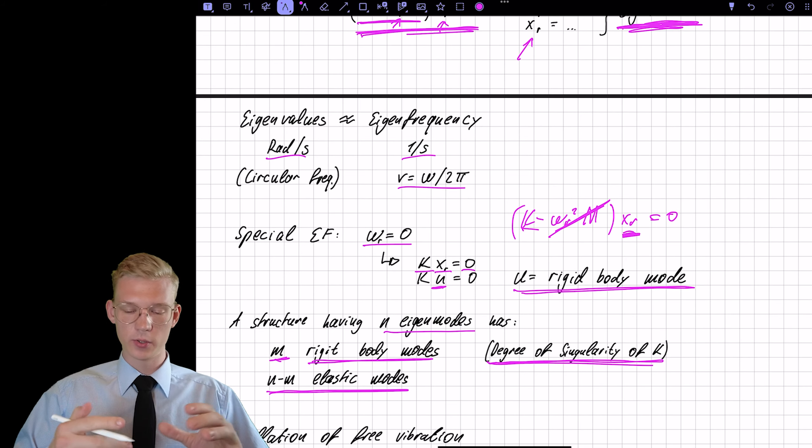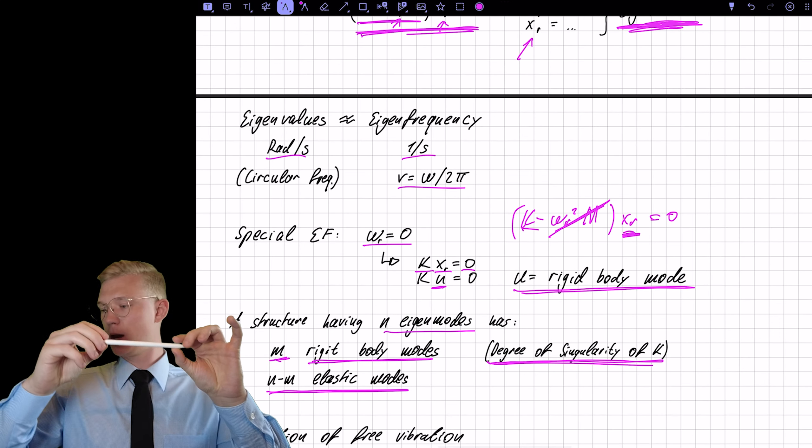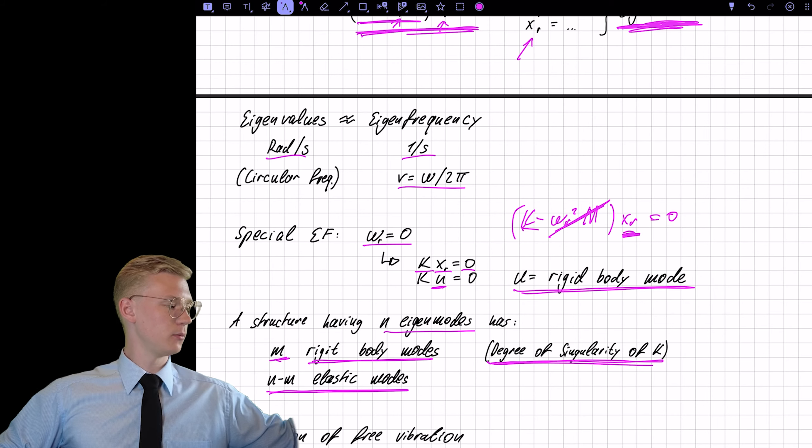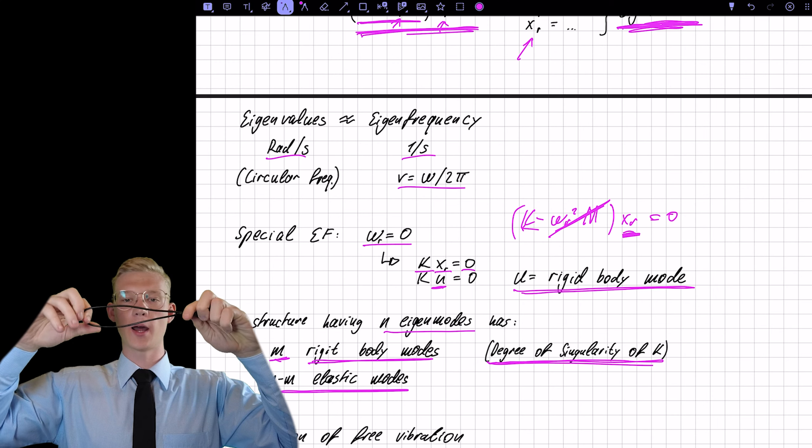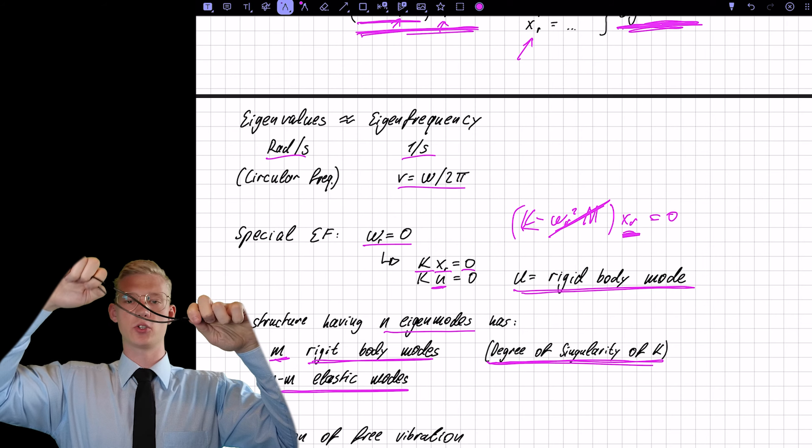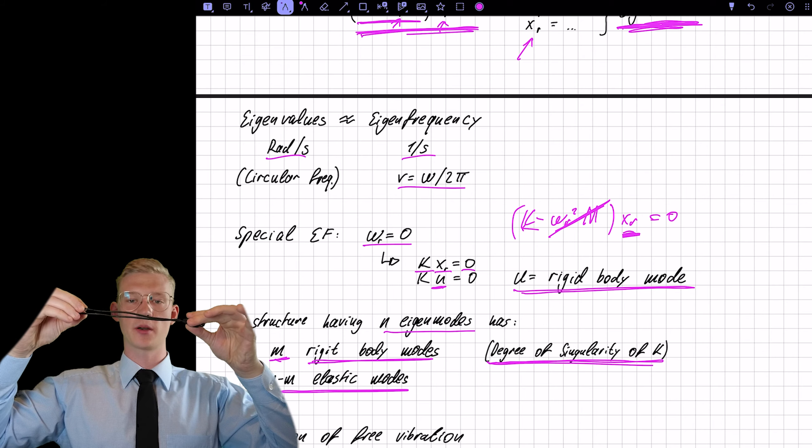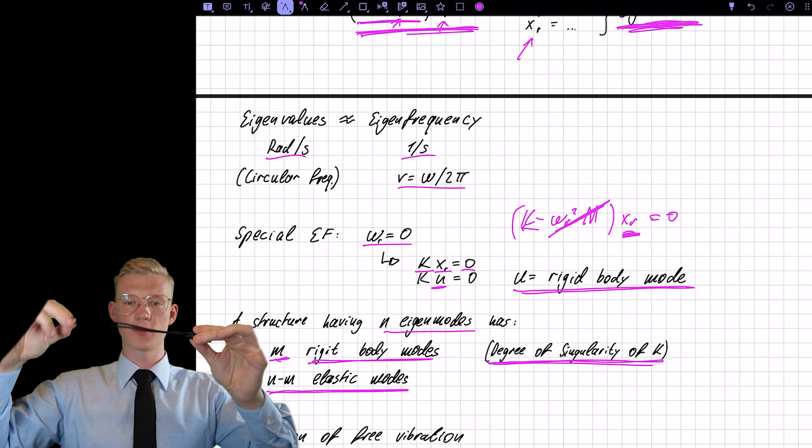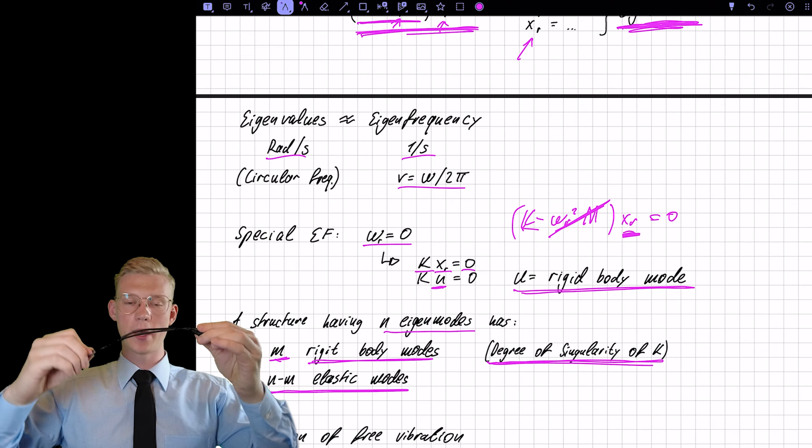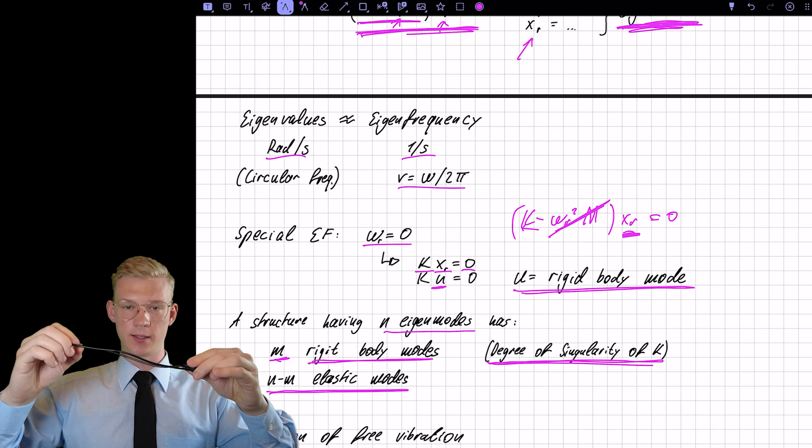And rigid body modes are, for example, if we look at a cable. One eigenmode would be just the oscillation back and forth or like this. And a rigid body mode is where the cable moves through space but introduces no elasticity. So this is a rigid body mode.